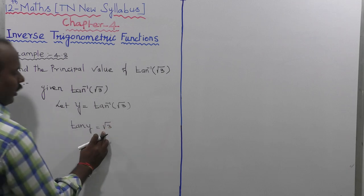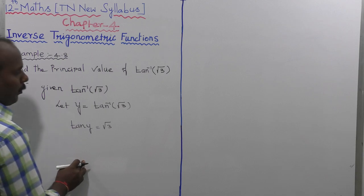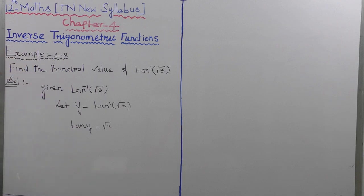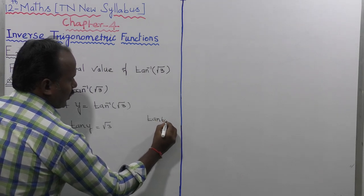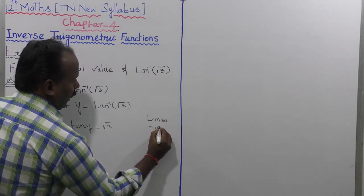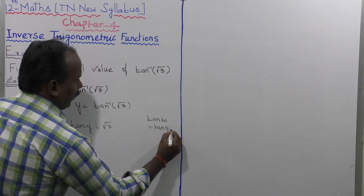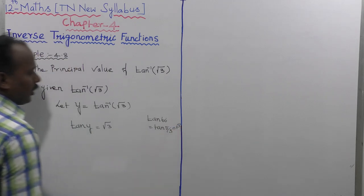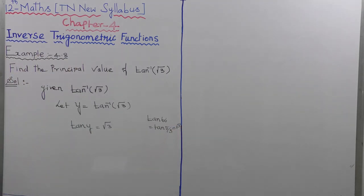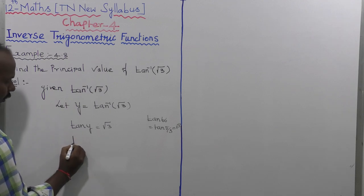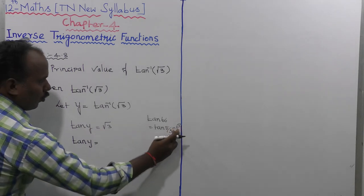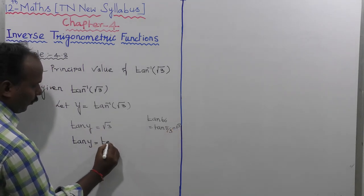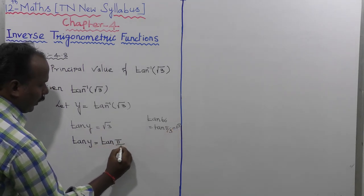Now, tan y equals root 3, and root 3 corresponds to pi by 3, since tan 60 degrees equals tan(pi by 3) equals root 3. So we replace root 3 with tan(pi by 3), giving tan y equal to tan(pi by 3).